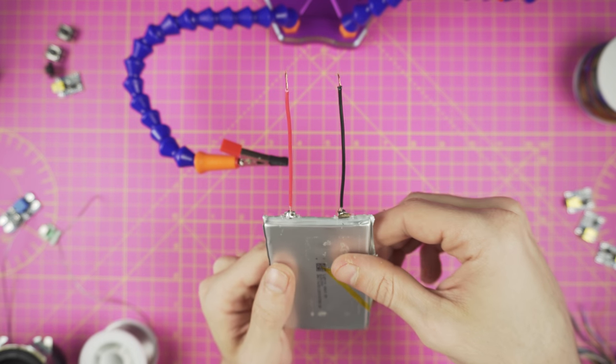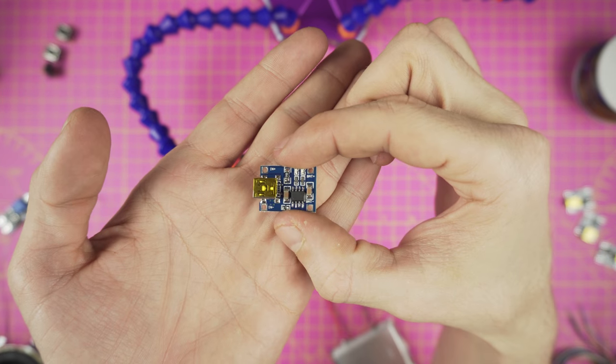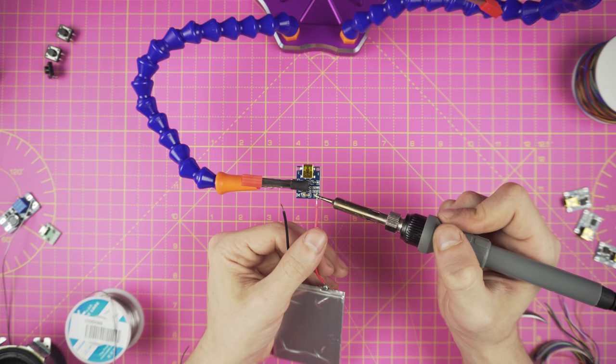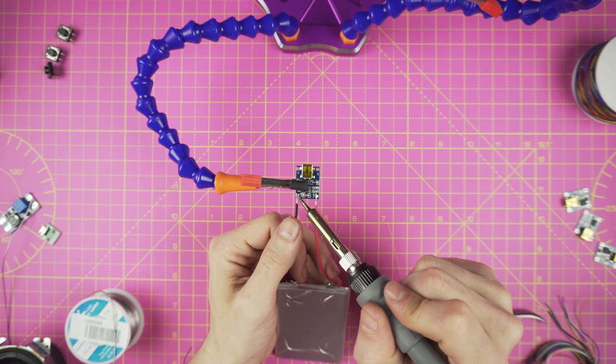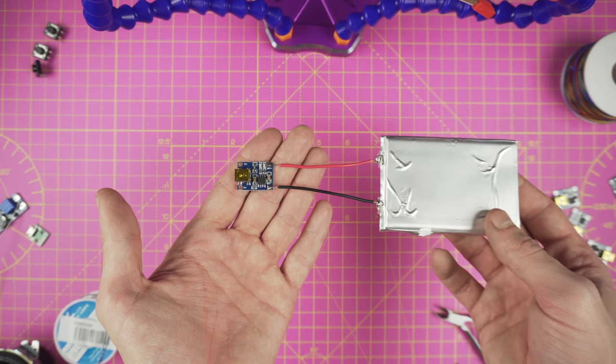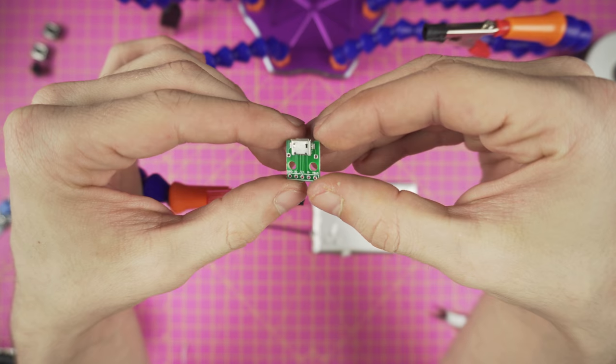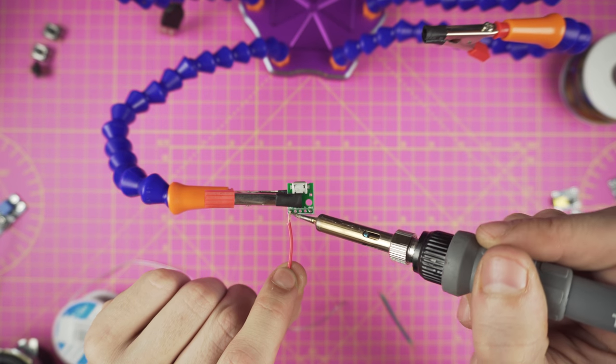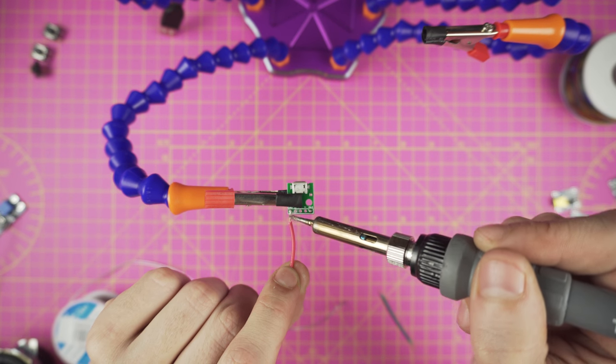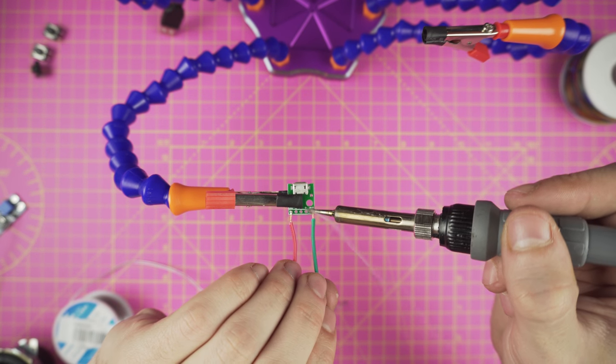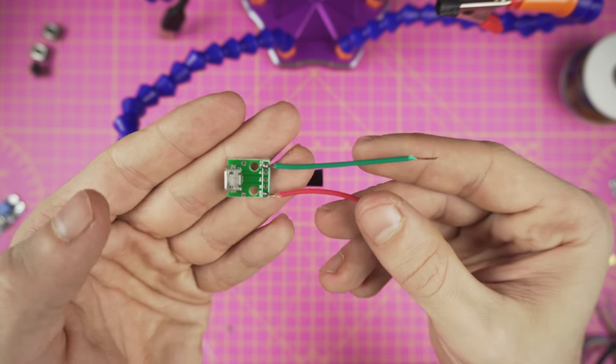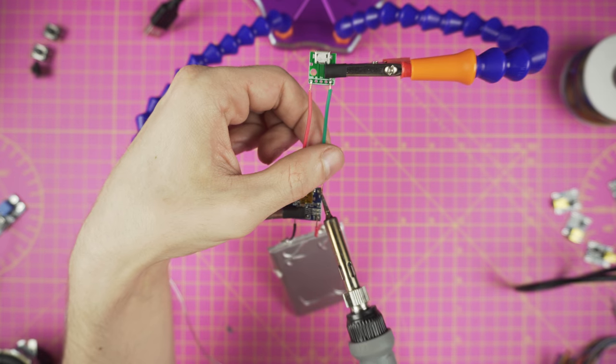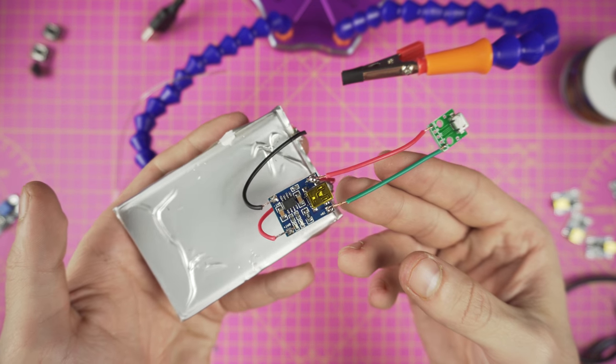In order to be able to charge it, we're gonna connect the TP4056 charger board. Solder the positive wire to the positive battery in pin and the negative to the negative one. With this done we are able to charge our battery, but we will need to add this micro USB female connector to be easier to mount it in the case later on. Solder the wires to the VBUS and the GND pins. Now we need to connect it to our battery charger. Solder the GND to the negative and VBUS to the positive pin. With this done we finished our battery module.